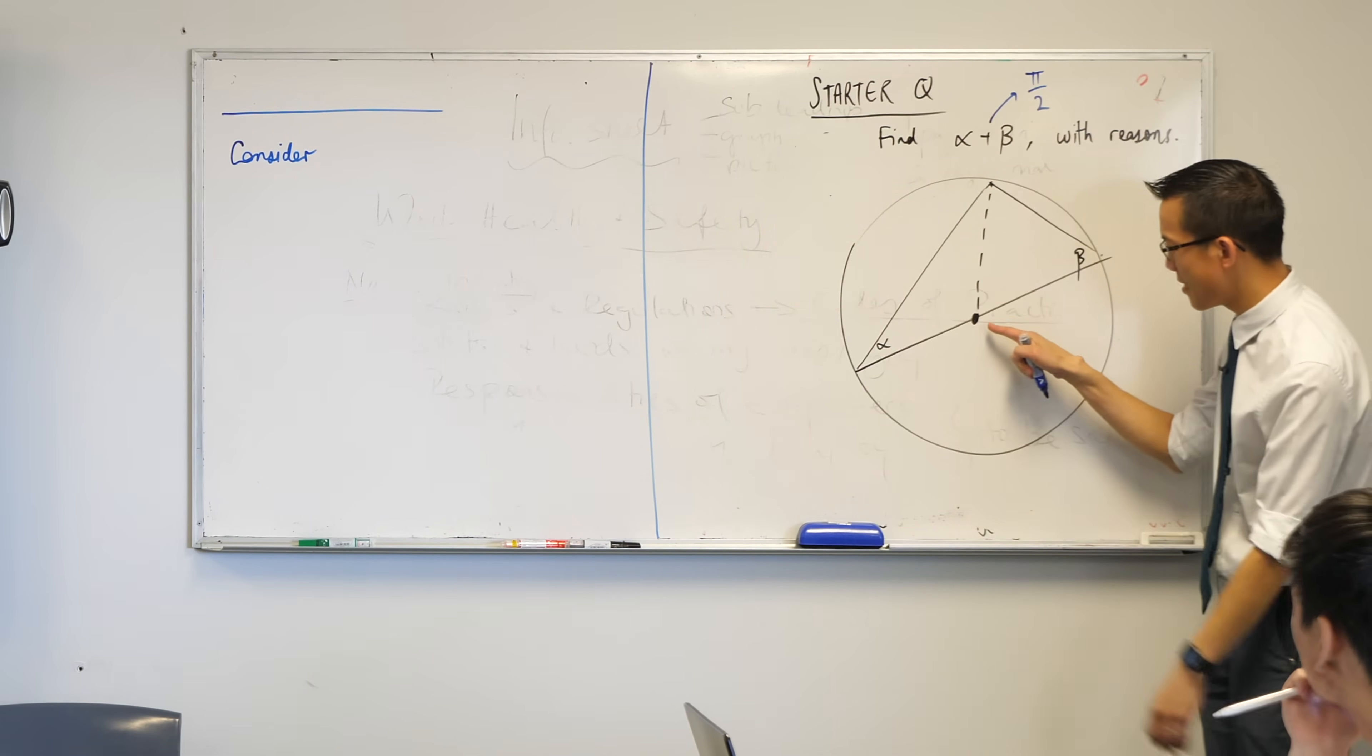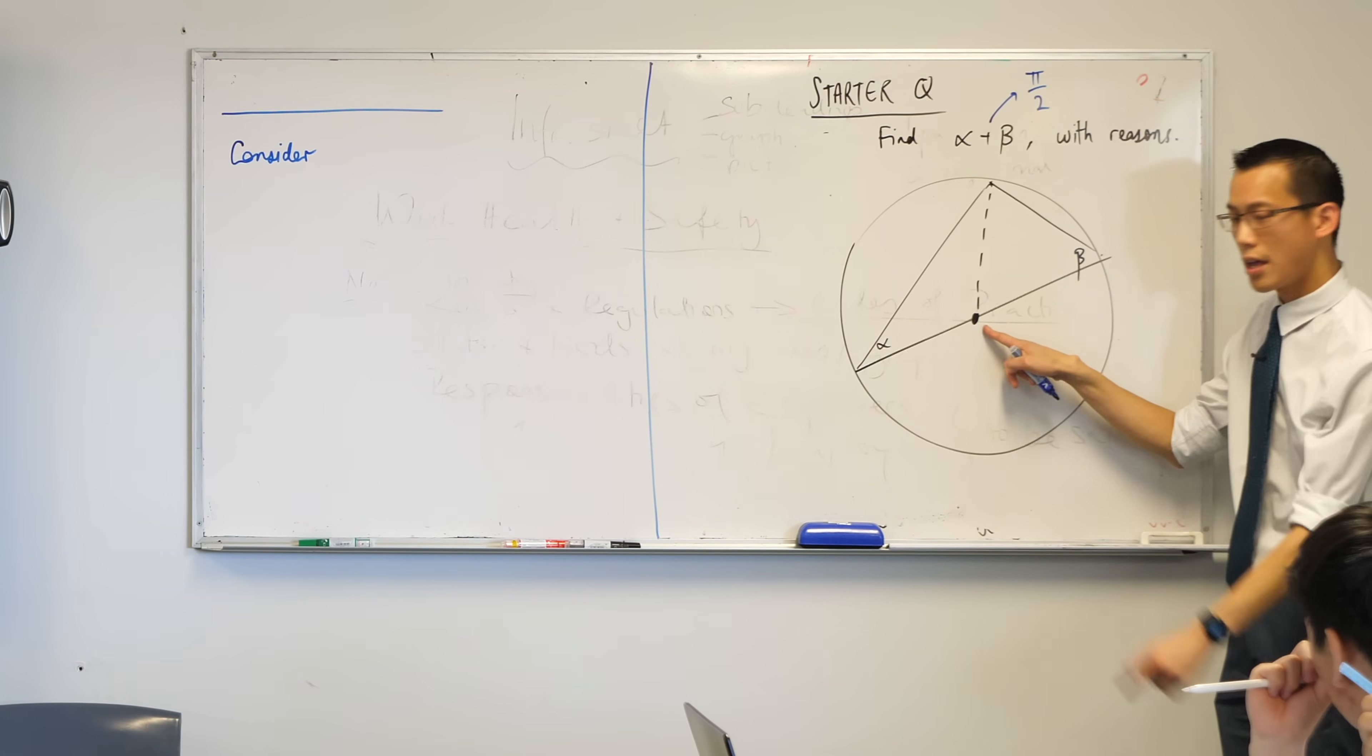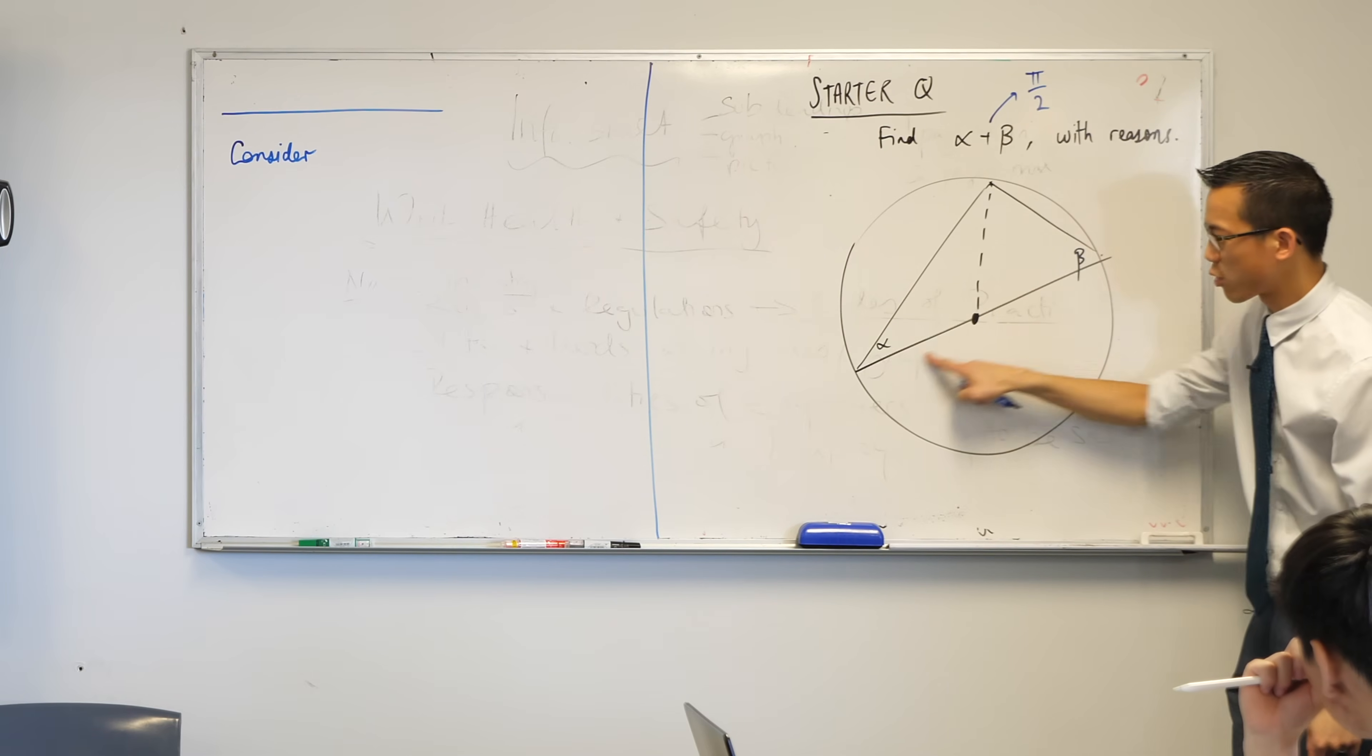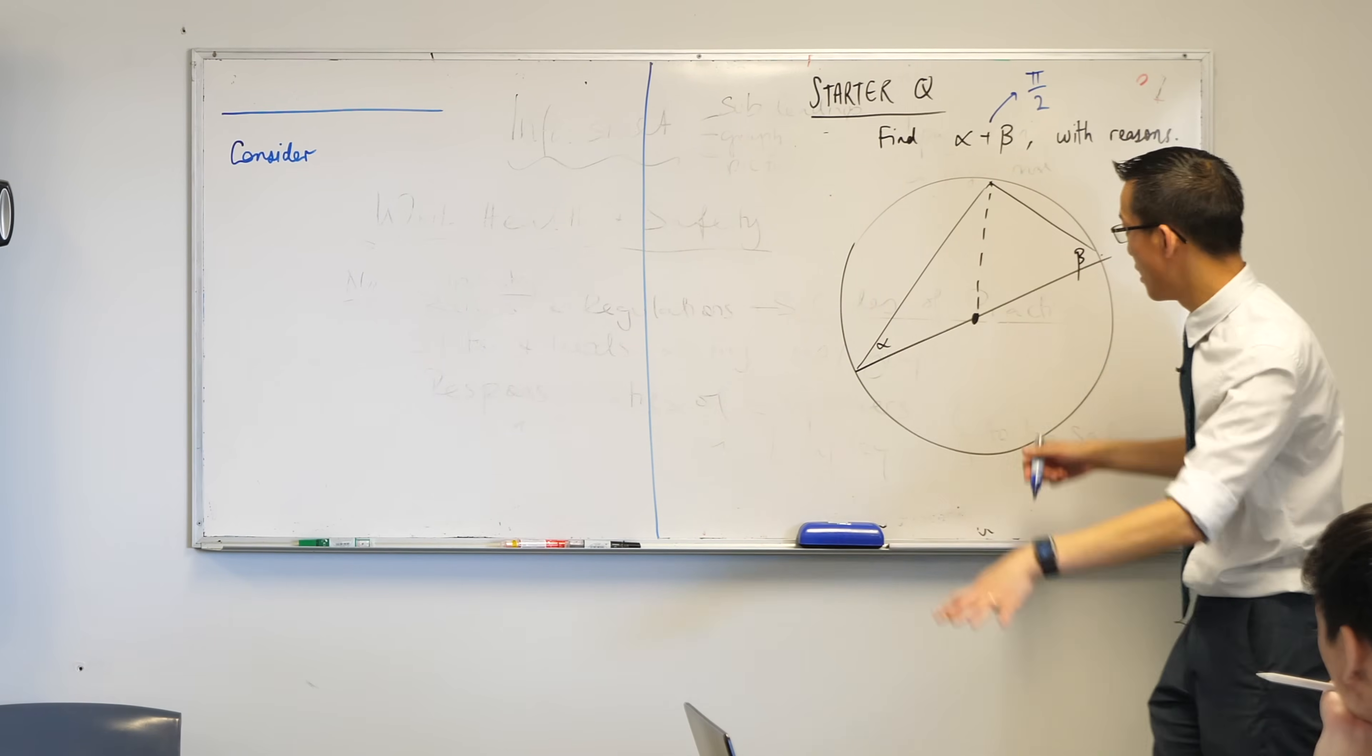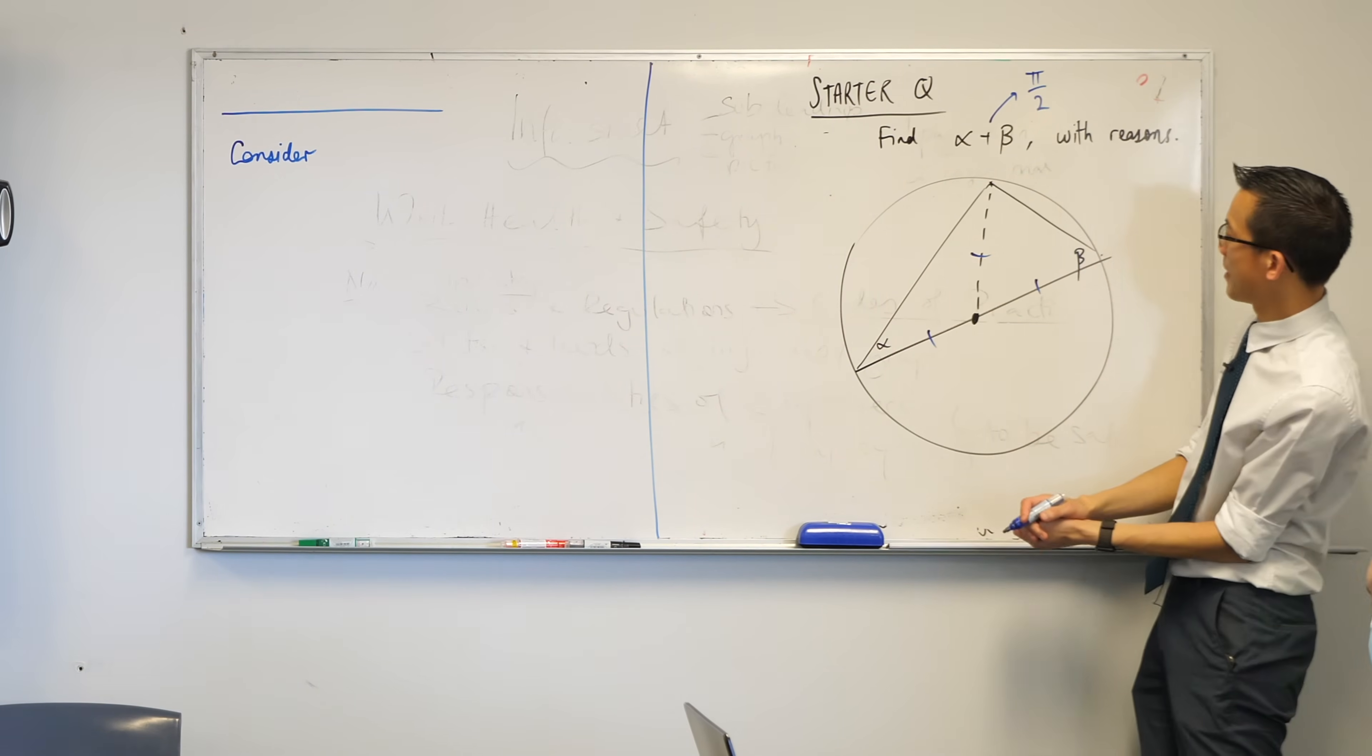This is a circle. This point here is marked in, which means it's the center of the circle. What can you tell me about these 1, 2, 3 intervals coming from the center? They're all equal. They're radii, aren't they? So maybe if you haven't already, go ahead and mark that in onto your diagram.